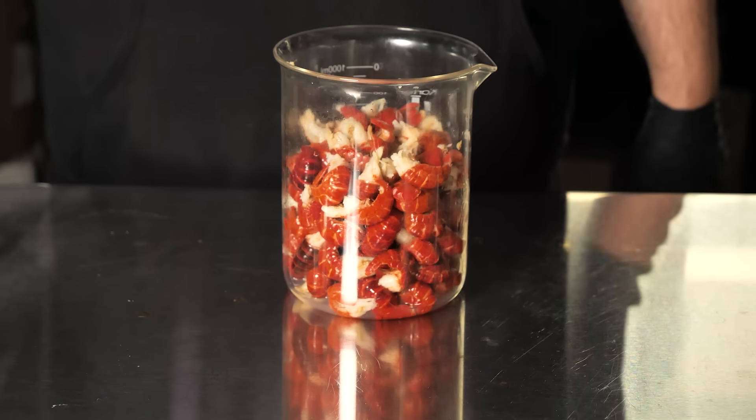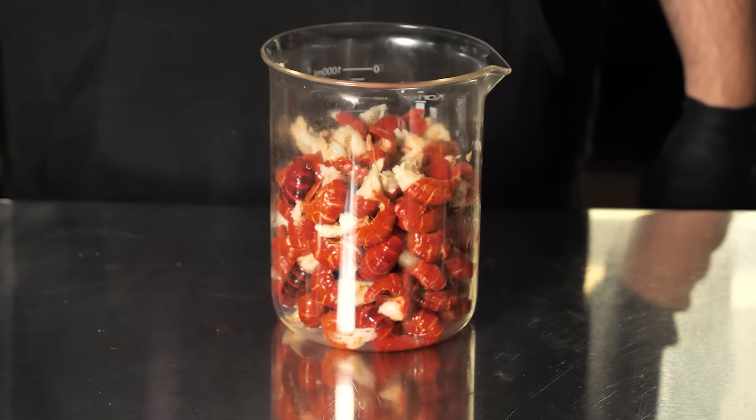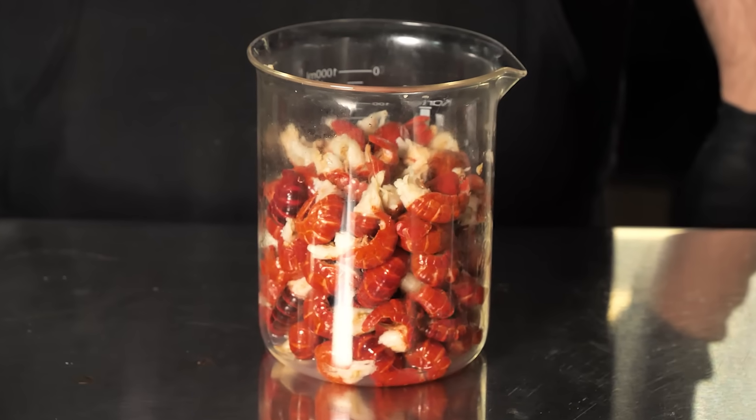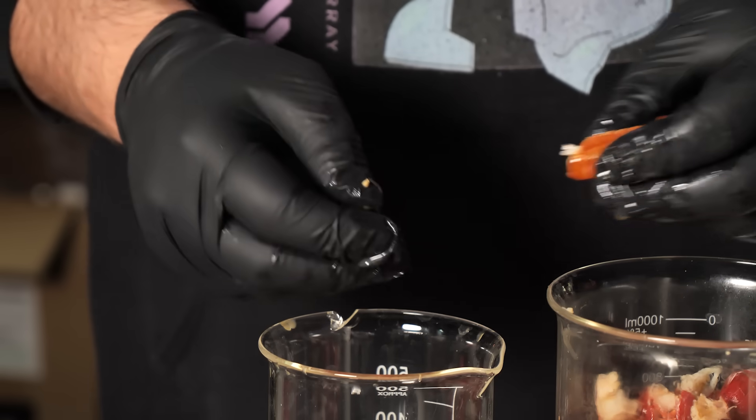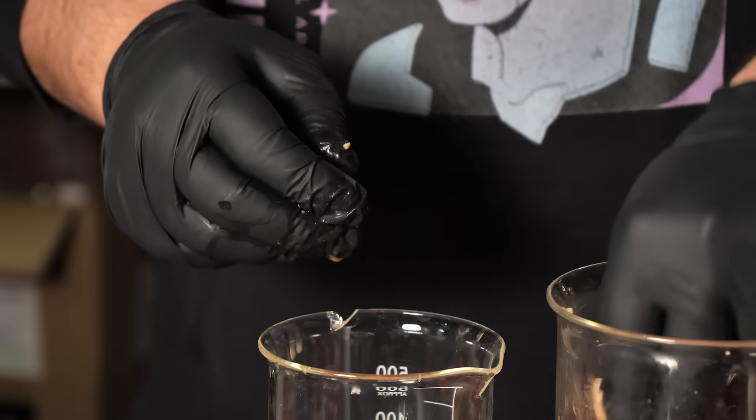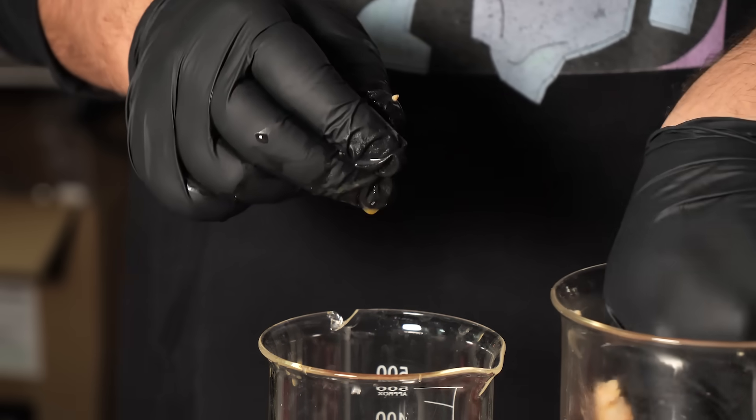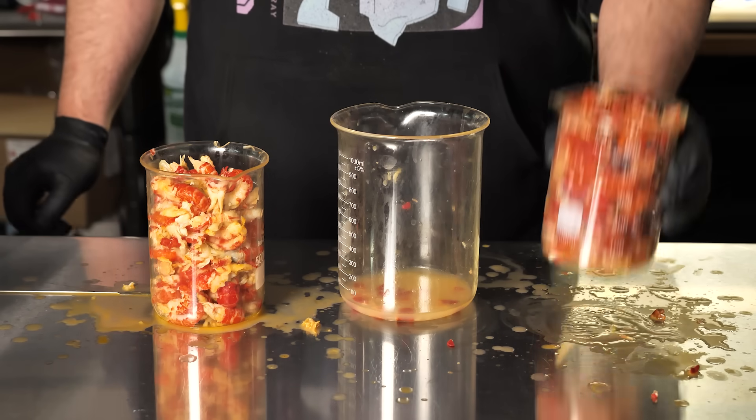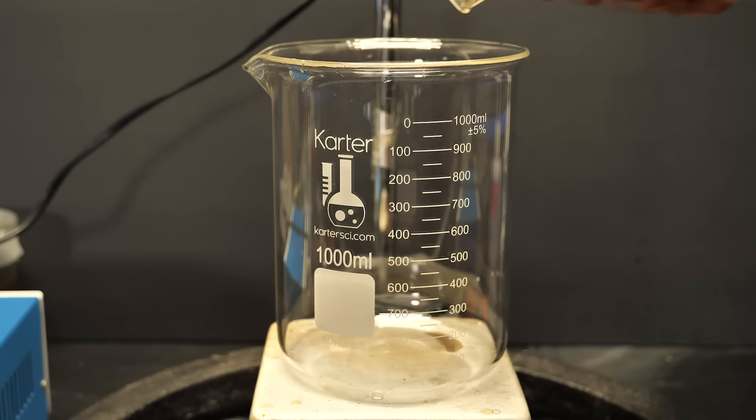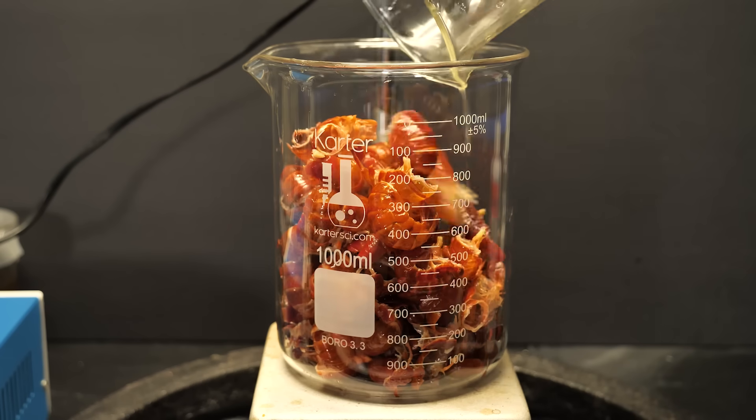By random happenstance, as we were shopping for this project, we found a bag of precooked crayfish tails on sale, so we're going to be using those instead of shrimp. But it's the same process, regardless of your source of chitin. We start by removing as much of the meat from the shells as physically possible. If you were already using a waste stream, this most likely would be done, but for now, we had to do it manually.